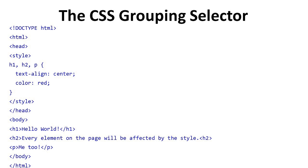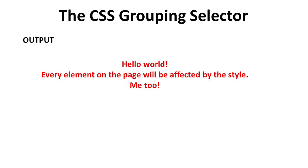We close the style tag and head tag. In the body, we take H1, H2, and P. In the P tag, we take the content 'This is a paragraph' and close the P. After that, we close the body and HTML tag. The output of the whole program is 'Hello World' in red color and aligned in center. The next heading is also in red color and in center.